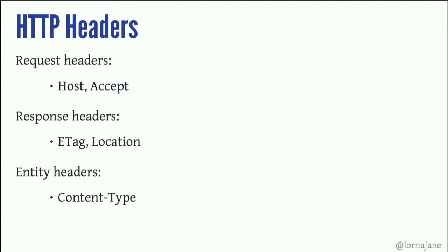There are various different types of headers. There are request headers — you've seen the host header, the accept header. There are response headers that come back and tell you about the metadata belonging to the response, like an e-tag, which gives a hash of the content for caching to know if something's changed. You might get a location header, which would cause your client to redirect. We also get entity headers, which can be included with either request or response — anything that has a body. If we're posting data there'll be a content type in the request, and when it comes back there'll be a content type in the response too.